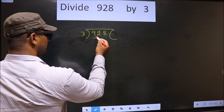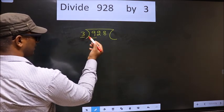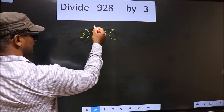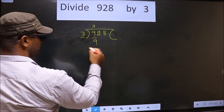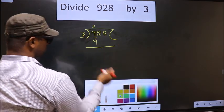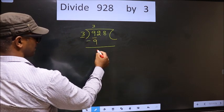Here we have 9, here 3. When do we get 9 in 3 table? 3 times 3 is 9. Now you subtract. 9 minus 9, 0.